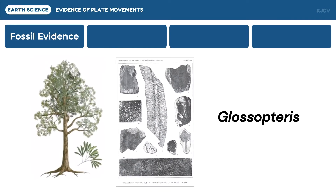One of the fossil evidence is Glossopteris. Since a plant as large as Glossopteris cannot move and cannot pollinate on the long range, it is believed that the presence of this plant in South America, Africa, Madagascar, Antarctica, India, and Australia is possible because of the connections of these places.